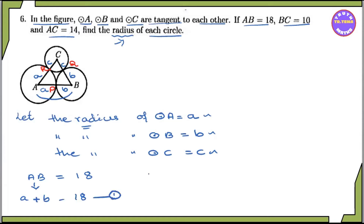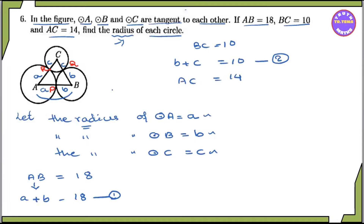Equation 2: BC is equal to b plus c, which equals 10. Equation 3: AC equals a plus c, which is equal to 14. So we have three equations: a plus b equals 18, b plus c equals 10, and a plus c equals 14.